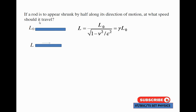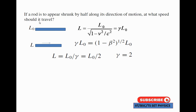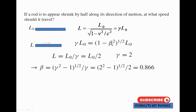This is also equal to gamma into L-naught. Since L equal to L-naught by 2, we get gamma equal to 2. Now we find beta from the gamma value using beta equal to (gamma-squared minus 1) to the power 1/2, divided by gamma. Substituting: beta equal to (2² minus 1) to the power 1/2, divided by 2, giving beta equal to 0.866.